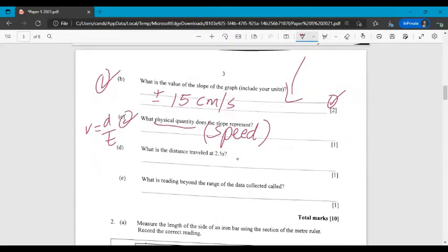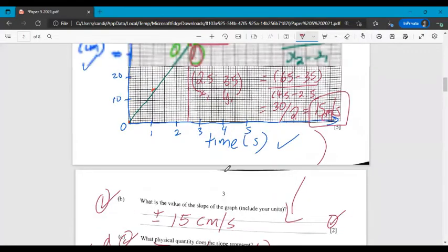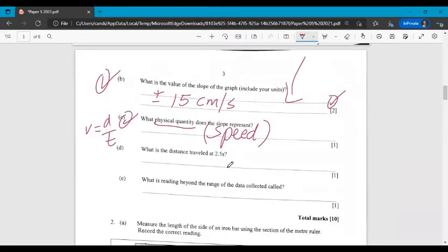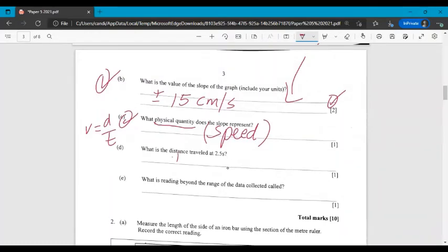Moving on. Part D. What is the distance traveled at 2.5 seconds? You read that from your graph. So at 2.5 seconds, you will get, according to my graph, I have a 35. So plus or minus should be closer to 37. So I'll say 35 to 38 meters, give you a range. So if you got somewhere in between there, then that's good.